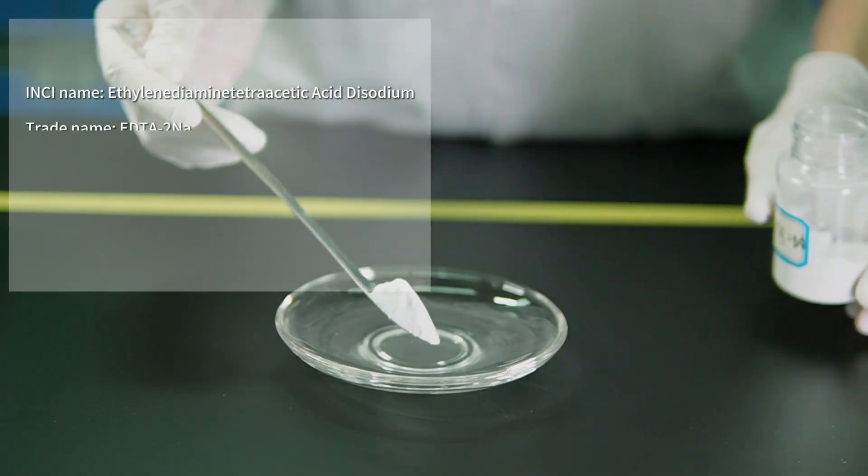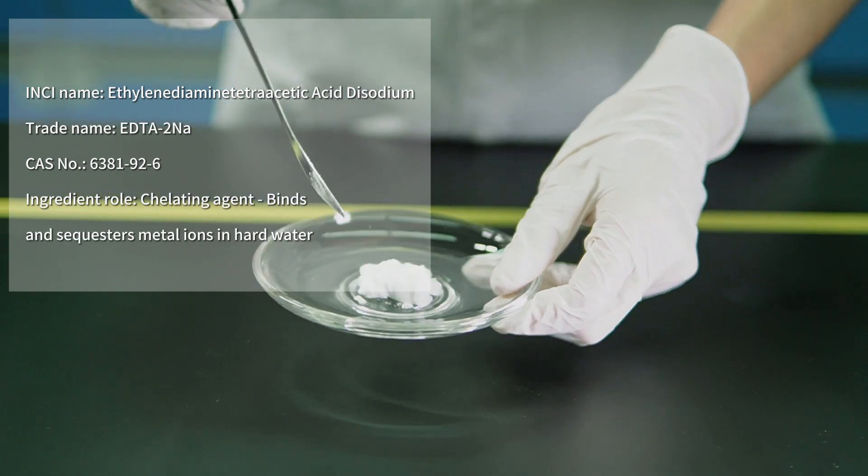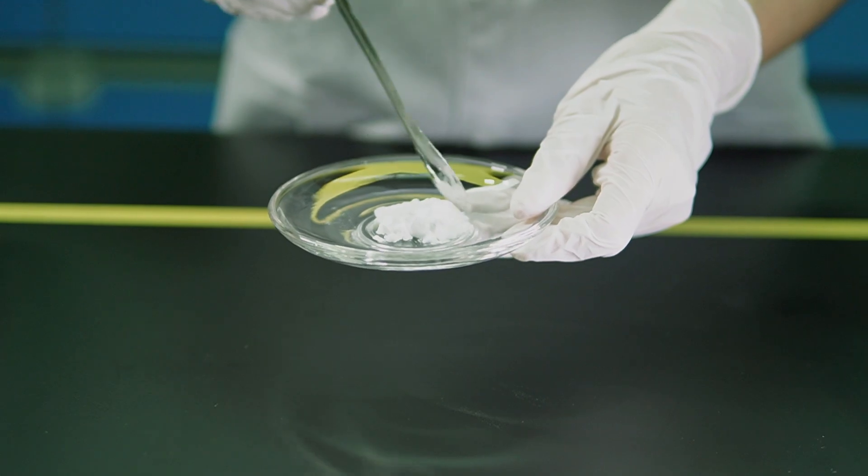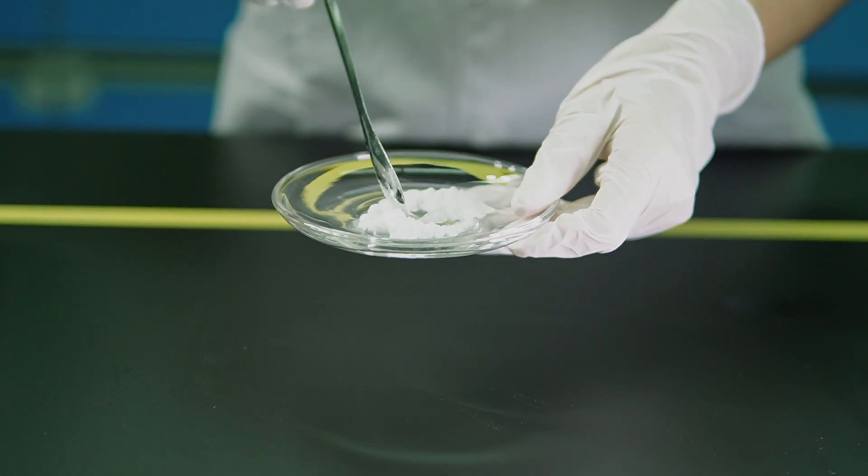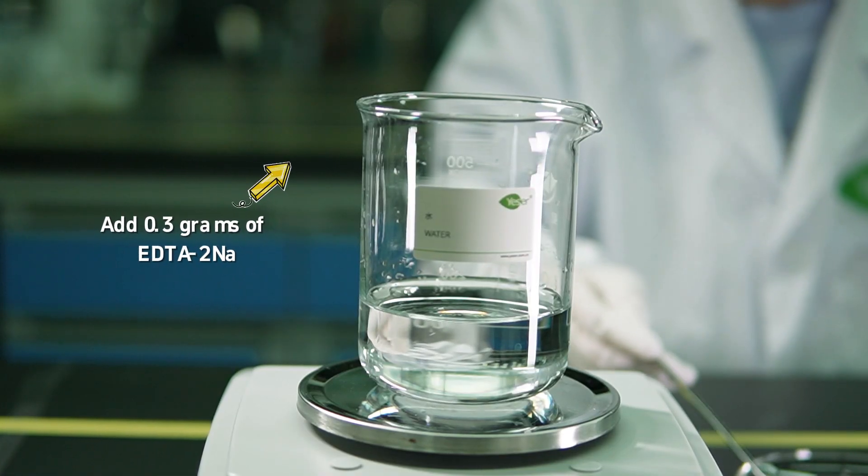Next up, we've got something really cool here. It's called ethylenediamine tetraacetic acid disodium, or commonly called EDTA-2Na for short. This might seem like a complicated name, but its job is simple and vital. It grabs onto metal ions, such as irons and calciums.